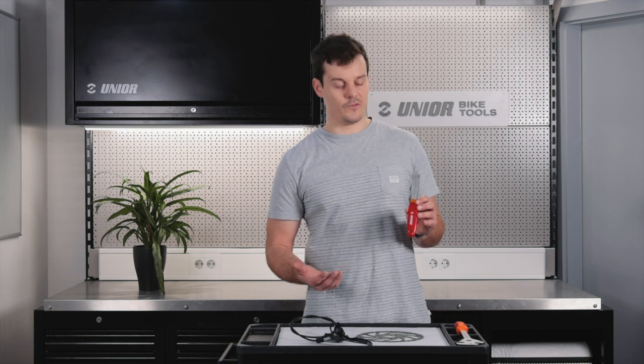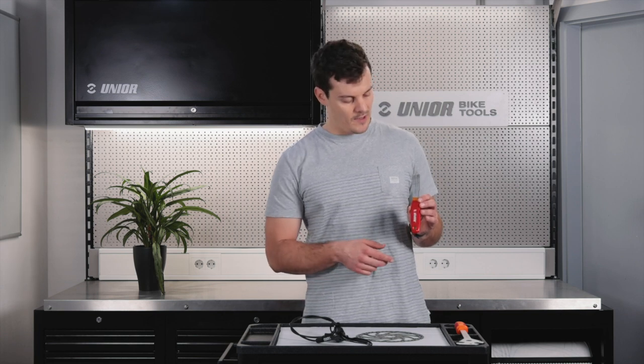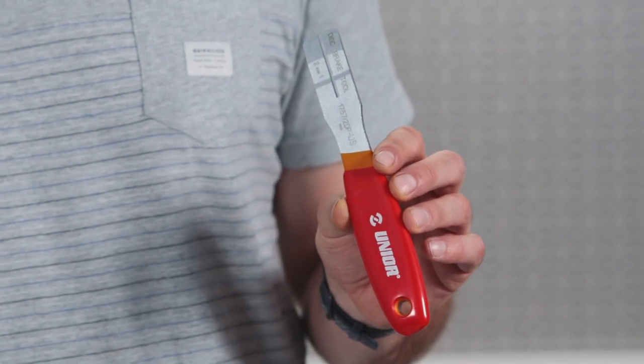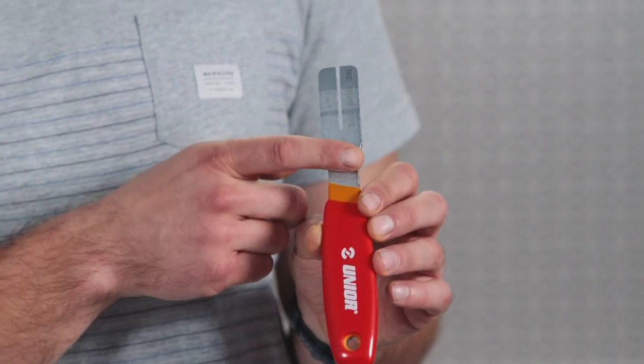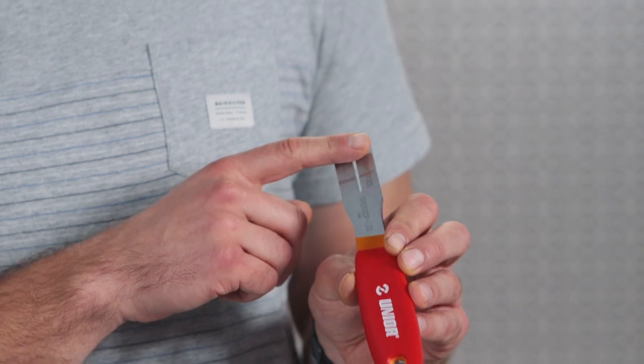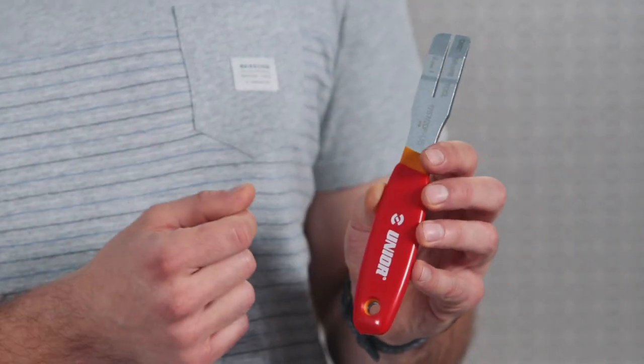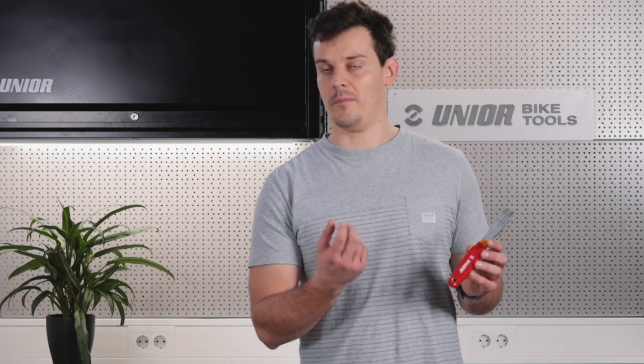As the name suggests, we have two functionalities here. The first one is the slot which you can use to true the rotor, and the second one is the conical shape of the head of the tool which helps you spread the disc brake pads or the pistons.